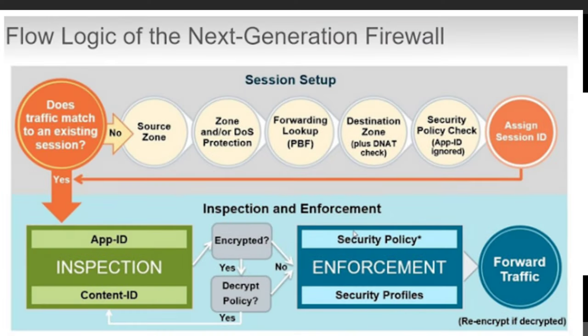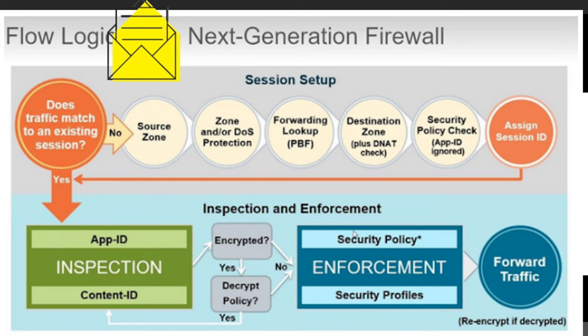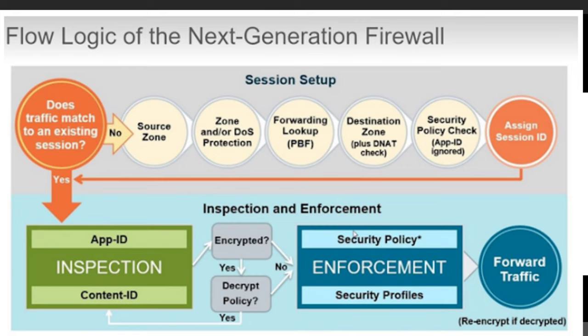Now let's look at the stages of packet processing. At the ingress stage, when a packet hits the firewall ingress or internal interface, the firewall checks packet details for spoofing and verifies layer 2 header parameters such as 802.1Q tags, destination MAC address, etc. This verification happens at the ingress stage, where the firewall checks the incoming packet traffic.